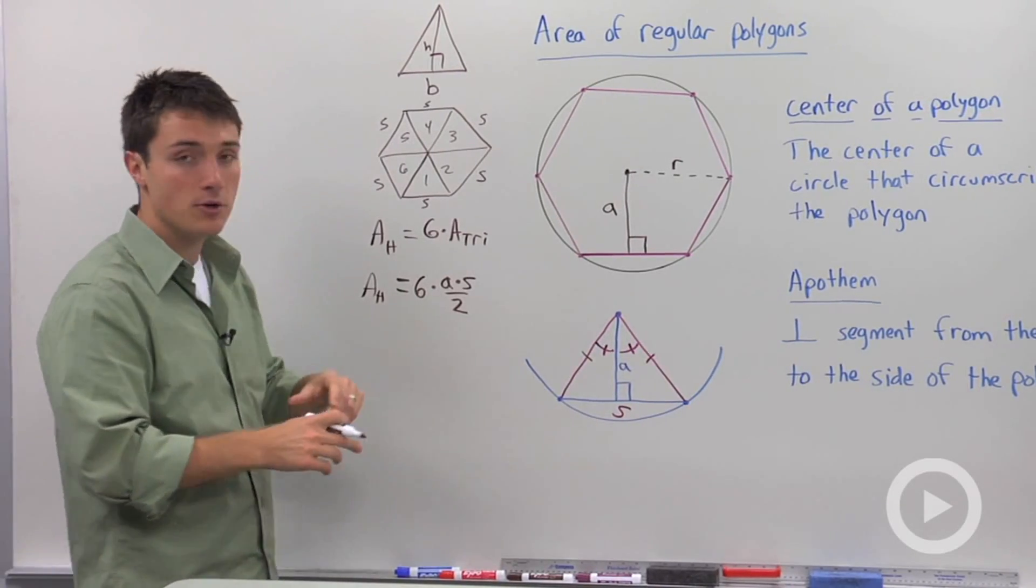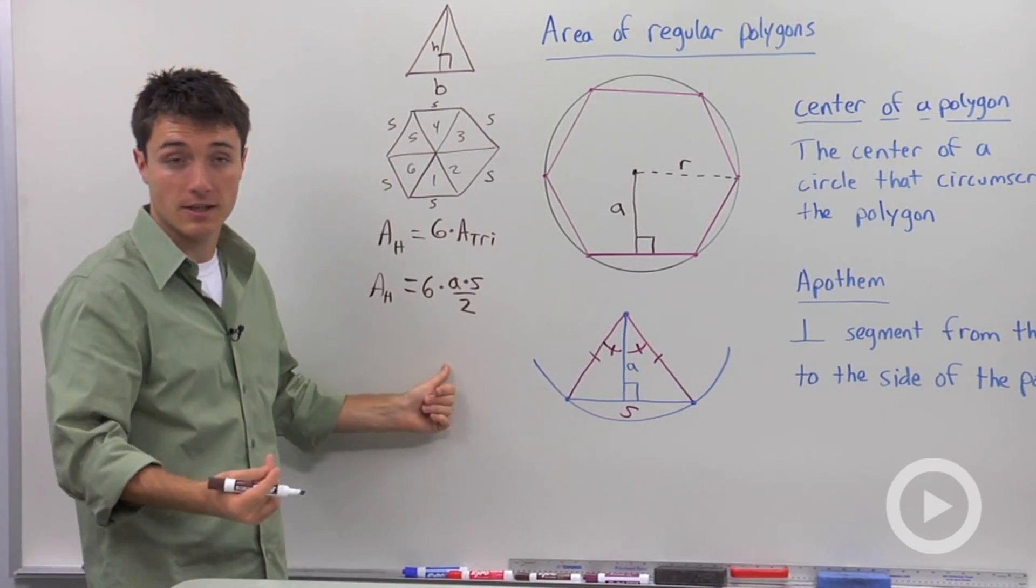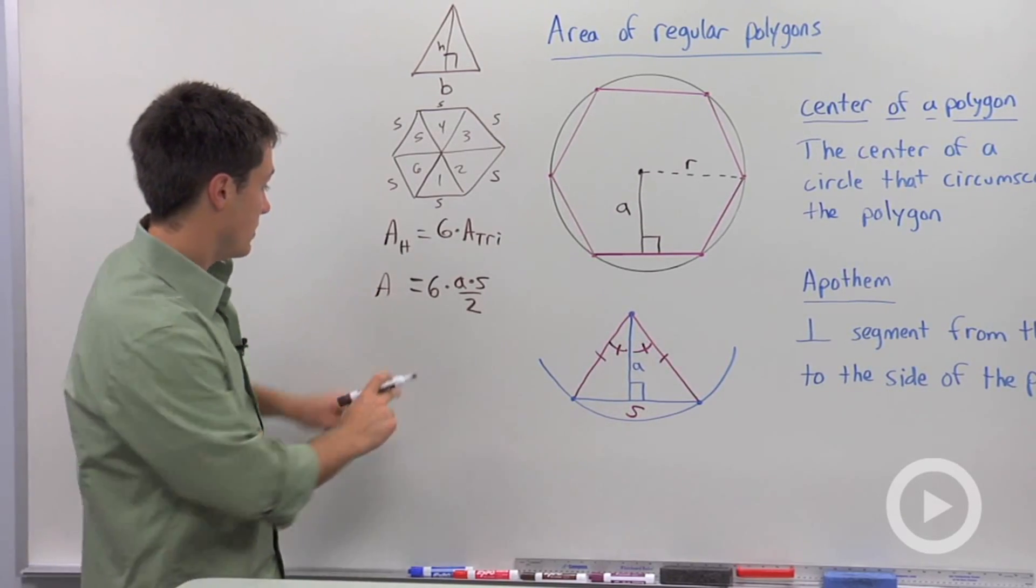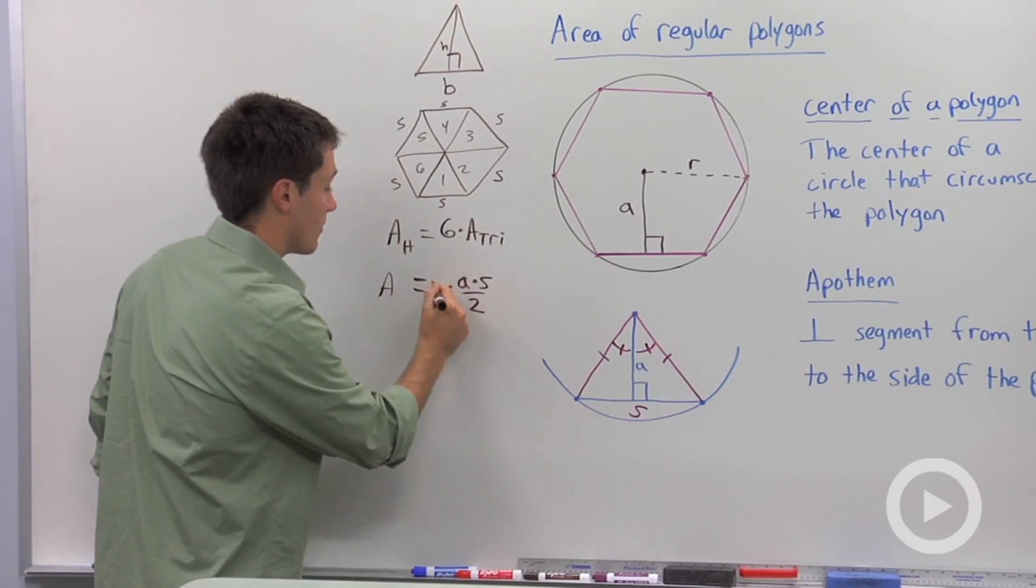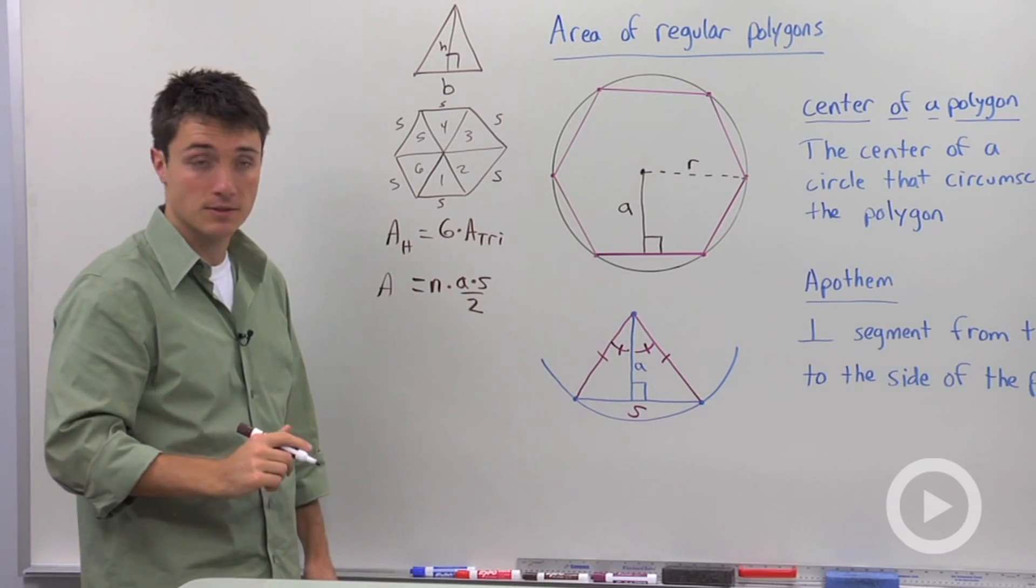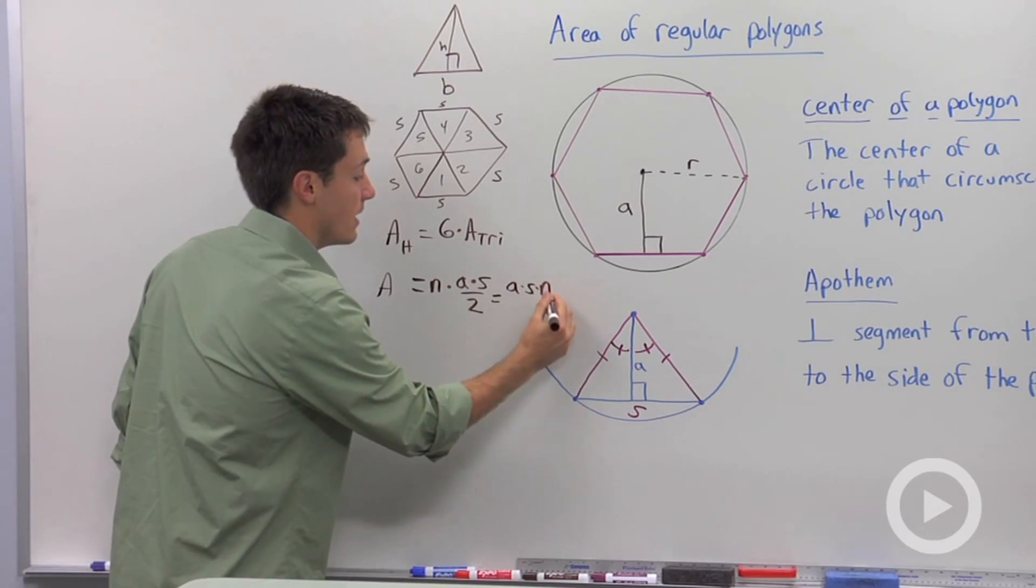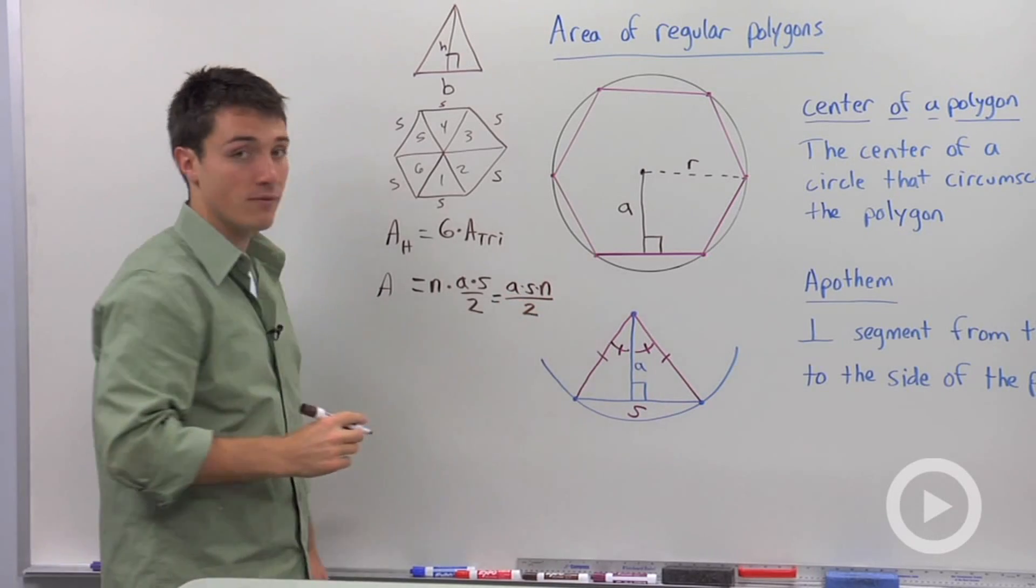But that's not very useful, because this is only going to apply to a hexagon. So let's make this area formula for any type of polygon. Instead of writing six, I'm going to write N for the number of sides. So I can write this as apothem, times side length, times the number of sides, all divided by two.